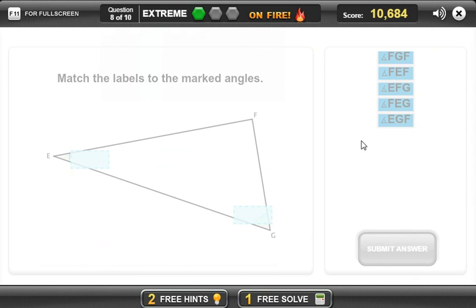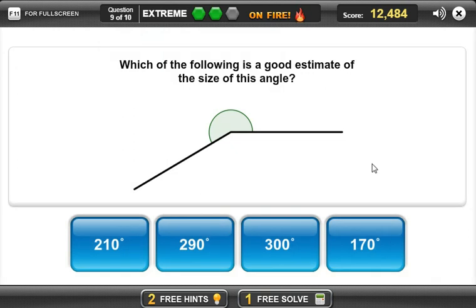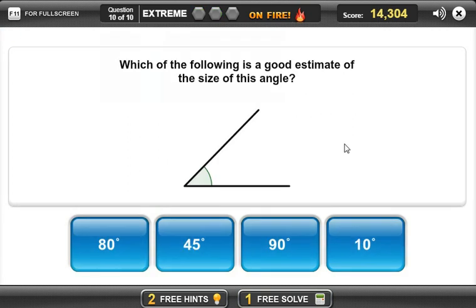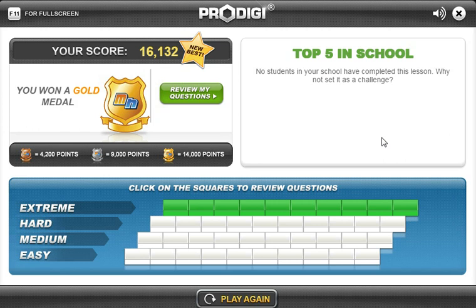We now it's a small one. F E G and E G F so that's greater than 180 and because we achieved 10 questions correctly we got a gold medal.